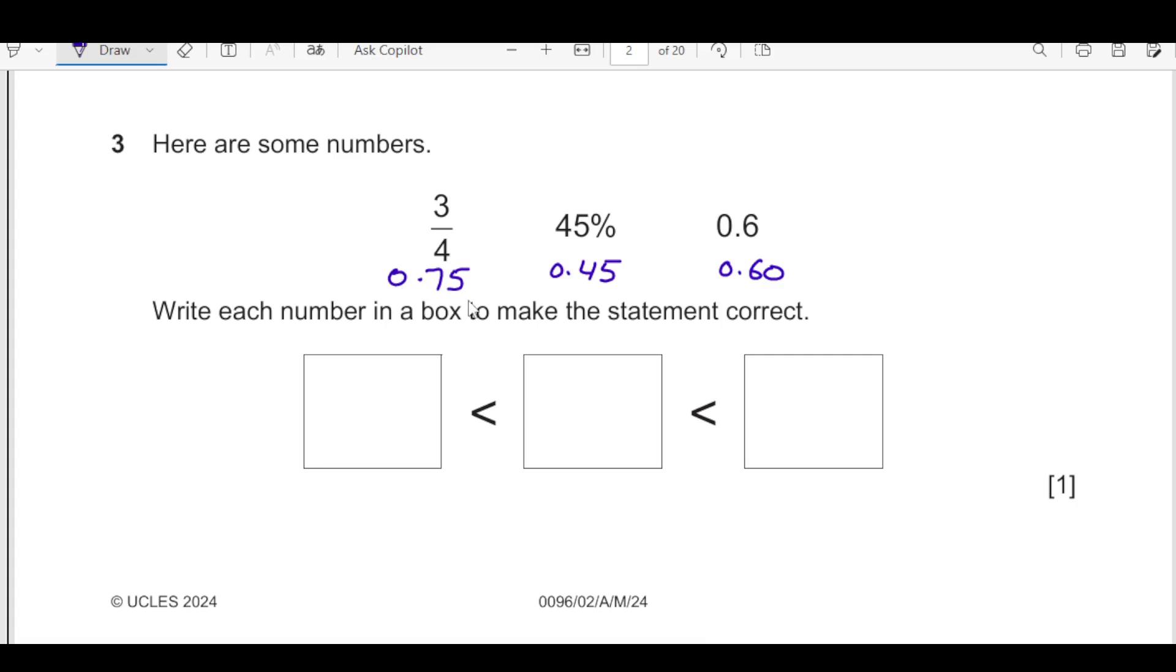This decimal part the smallest one is here is 45. So that means this is going to be at number 1 and then 45 is less than this 60, 0.60, then number 3 it is going to be this. Remember that you are going to write down the original number whether it is fraction or percentage. The first one is 45 percent. We will write down here 45 percent then number 2 we have 0.6 and number 3 we have 3 over 4.